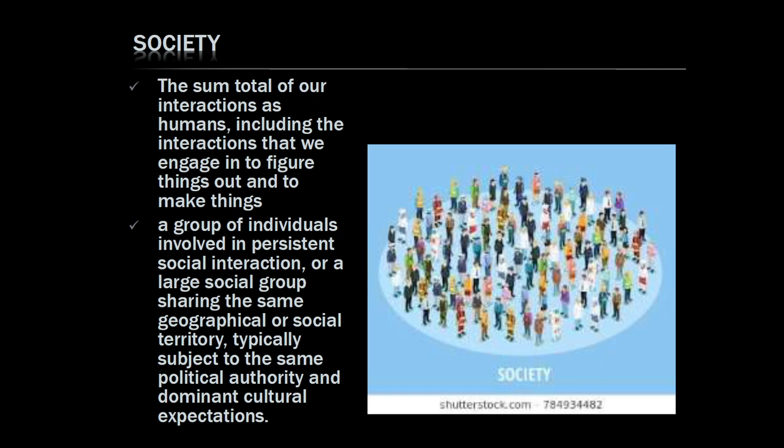Society is the sum total of our interactions as humans — including the interaction we engage in to figure things out and to make things. Society is a group of individuals involved in persistent social interaction, or a large social group sharing the same geographical or social territory, typically subject to the same political authority and dominant cultural expectations.